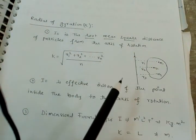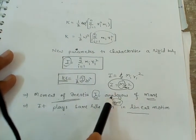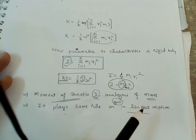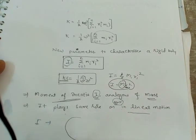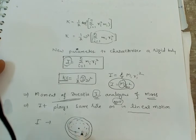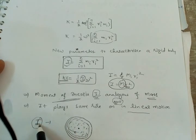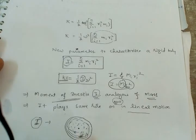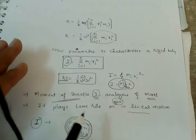Moment of inertia I is analogous to mass in the same way. I describes how the mass is distributed in the body — that is, the mass distribution within the body is described by the moment of inertia I.